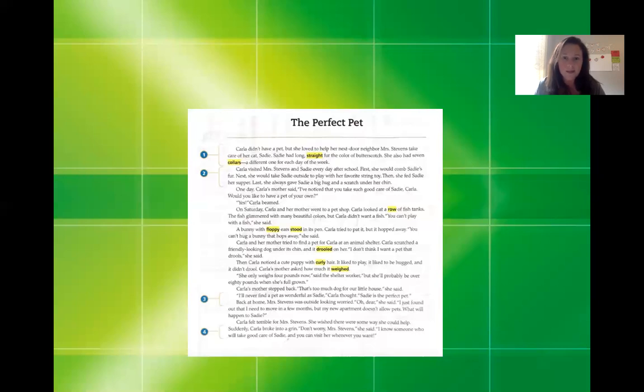One day, Carla's mother said, I noticed that you take such good care of Sadie, Carla. Would you like to have a pet of your own? Yes, Carla beamed. On Saturday, Carla and her mother went to the pet shop. Carla looked at a row of fish tanks. The fish glimmered with many beautiful colors. But Carla didn't want a fish. You can't play with a fish. A bunny with flappy ears stood in its pen. Carla tried to pat it, but it hopped away. You can't hug a bunny that hops away.